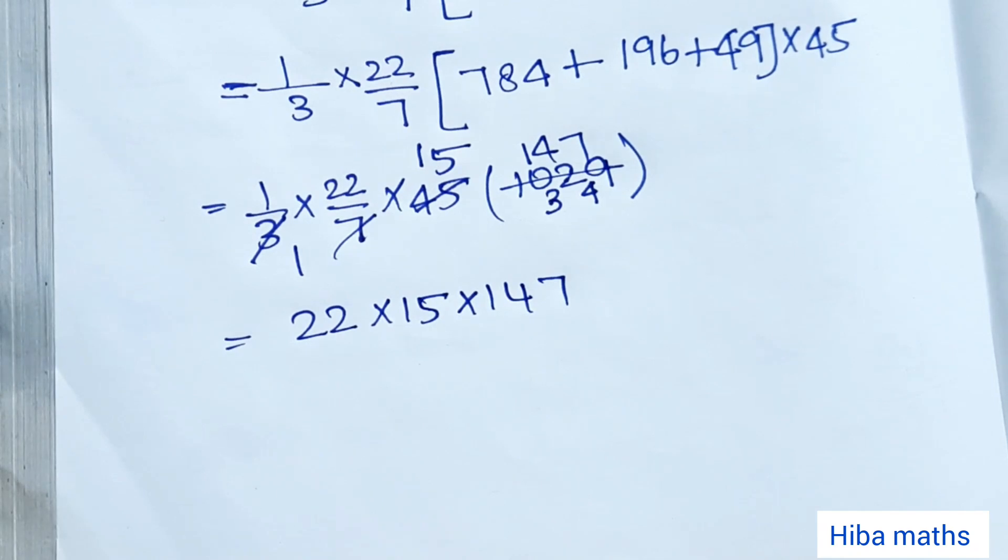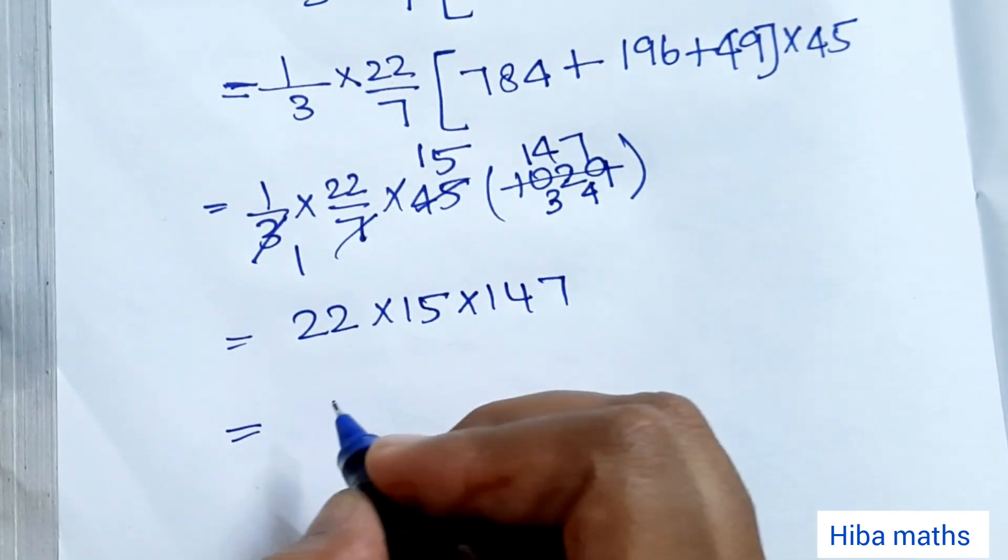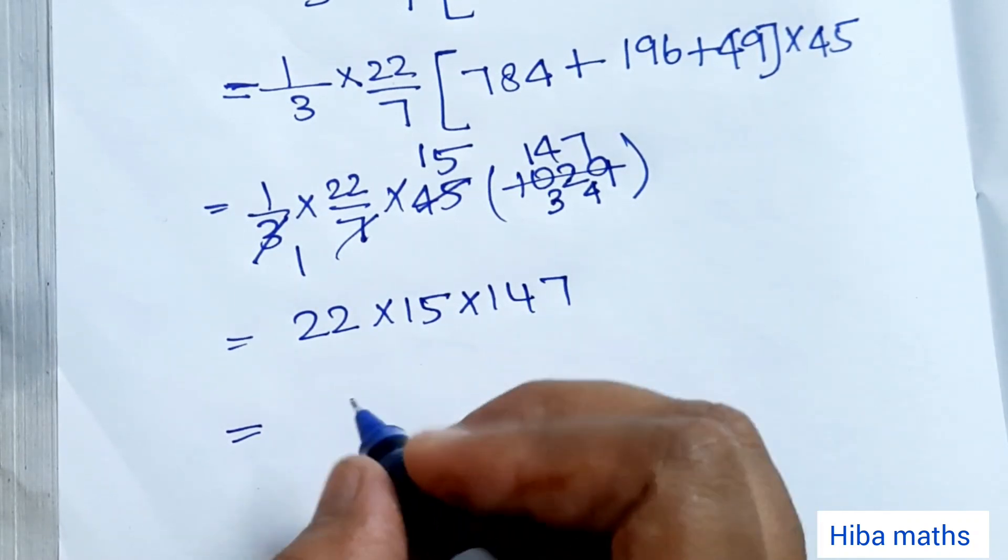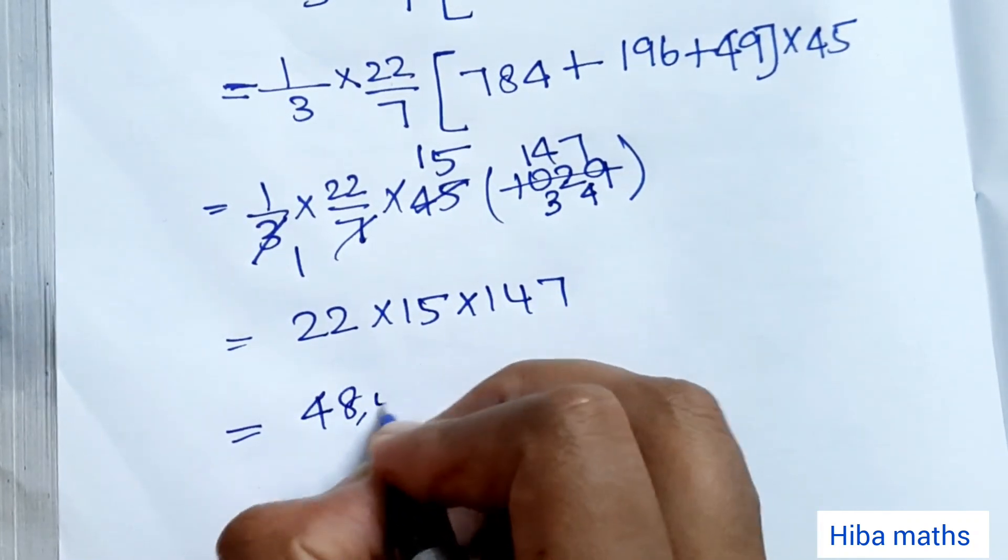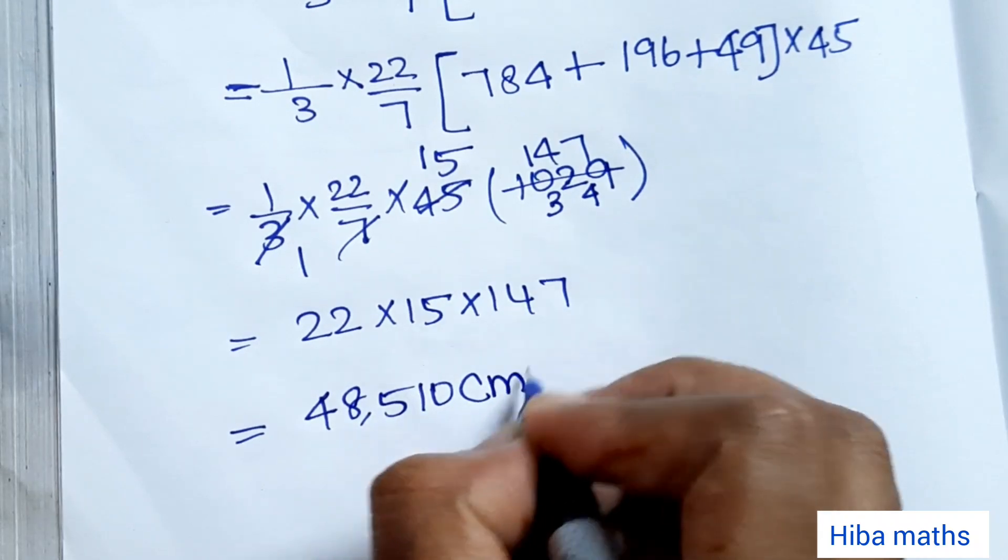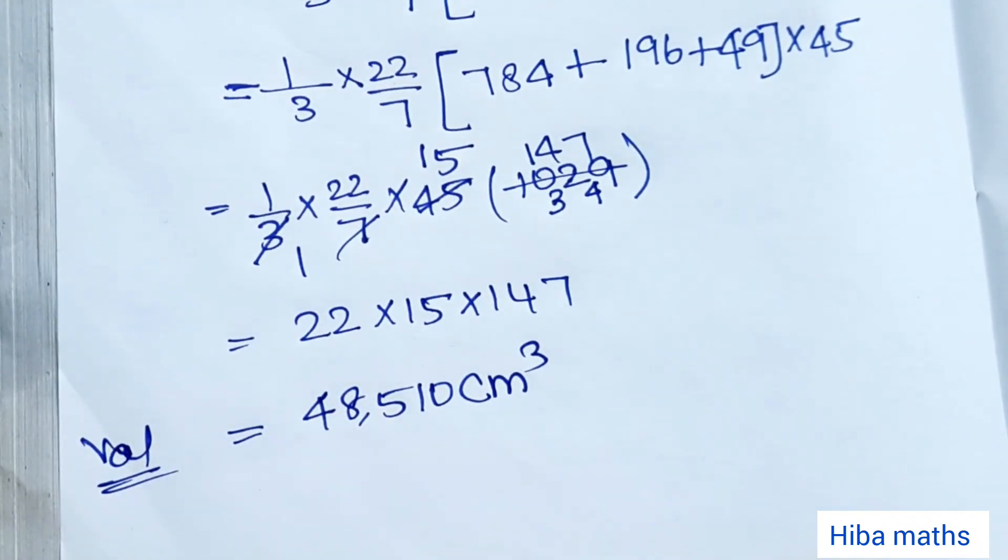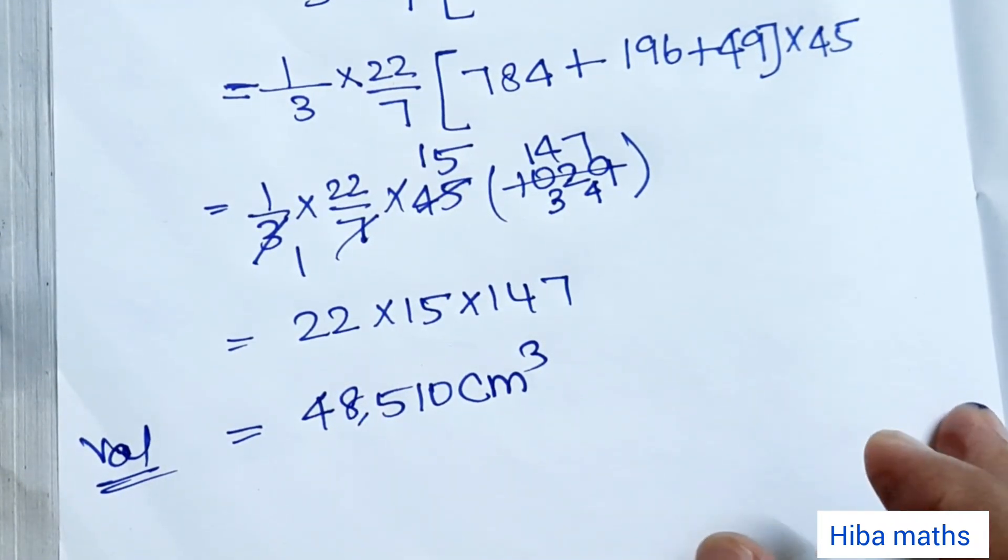So this we'll multiply. Answer is 48,510. 48,510 cm³ is the volume of frustum. Easy to understand calculations. Thank you so much for watching.